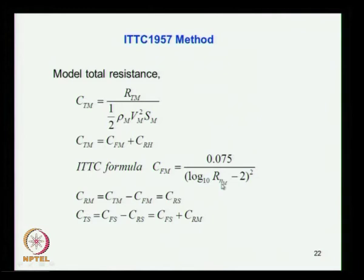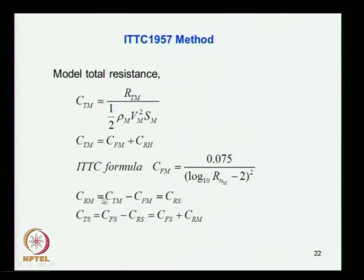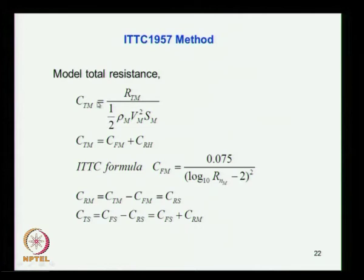The ITTC formula gives the frictional resistance CFm based on flat plate experiments as 0.075 divided by (log Rn_m minus 2) squared, where the Reynolds number used is that of the model. You find this quantity from the ITTC formula and substitute it, so CRm equals CTm minus CFm. CTm is already measured from the total resistance of the model, so you can find CRm. The test is based on the Froude assumption: the Froude number of the ship equals the Froude number of the model.